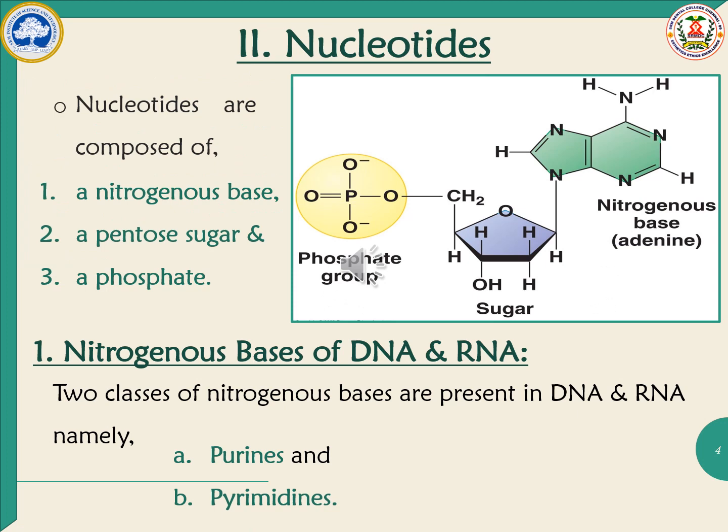Now we will see nucleotides. A nucleotide is composed of three components: a nitrogenous base linked to the ribose sugar by glycosidic linkage, and the sugar attached to a phosphate group. The N-atom of the nitrogenous base attaches to carbon 1 of the pentose sugar, while the fifth carbon atom of the pentose sugar attaches to the phosphate group.